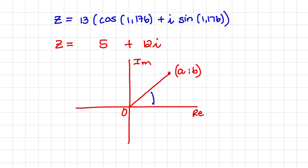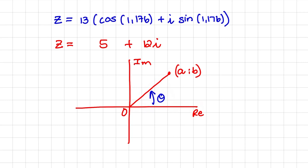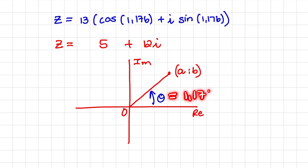The second thing that we need to consider is the argument. The argument is the angle between the real axis and the line between the origin and that point. We represent the argument in radians, and in this example that angle is equal to 1.176 radians.